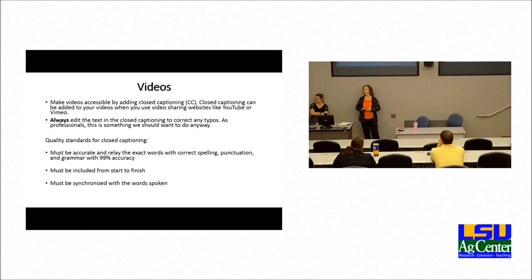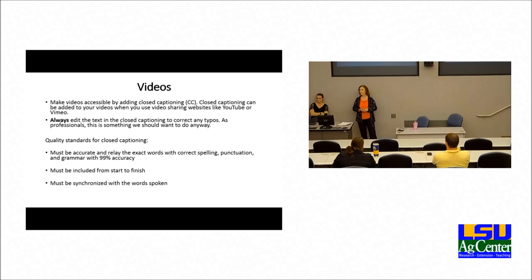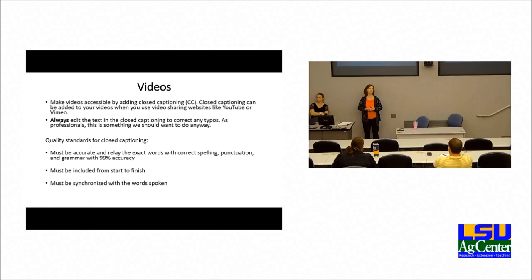Videos: make videos accessible by adding closed captioning or CC. Closed captioning can be added to your videos when you use video sharing websites like YouTube or Vimeo. Always edit the text in closed captioning to correct any typos — not only for ADA compliance, but as professionals we should want to do that anyway. Quality standards for closed captioning: it must be accurate and relay the exact words with correct spelling, punctuation, and grammar with 99% accuracy. This comes from the Federal Communication Commission. It must be included from start to finish and must be synchronized with the words spoken.